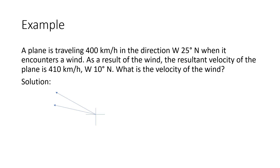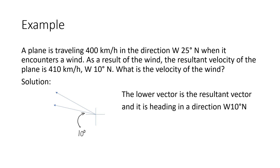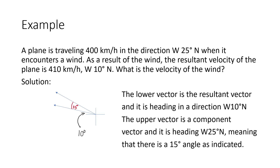We draw our diagram. It's good to draw a north-south-east-west grid at the tail of each vector. Two of the vectors are tail to tail, so drawing a grid at the tail of each means drawing just one such grid. The resultant vector makes a 10 degree angle with the horizontal line because it's 10 degrees to the north of west. The upper one makes a 25 degree angle with the horizontal line, which means it makes a 15 degree angle with the other vector, because 15 and 10 will equal 25.